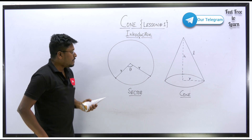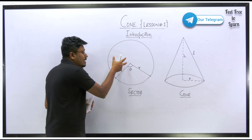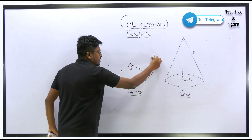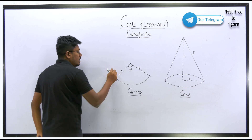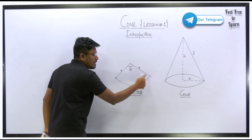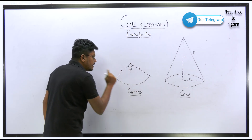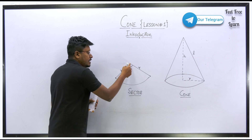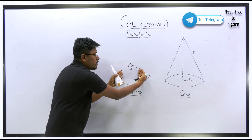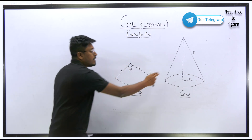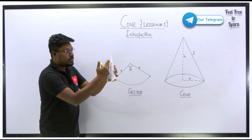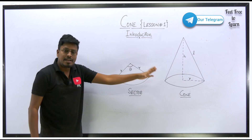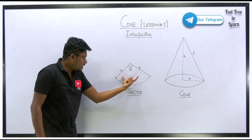A sector is one region or part of a circle. It is derived from a circle, and the two straight edges of a sector are the radii of that circle. Now, if you think of the sector as a piece of paper and fold the two radii together so they connect, the shape that forms is a cone. So joining the two radii of a sector gives you the shape of a cone.